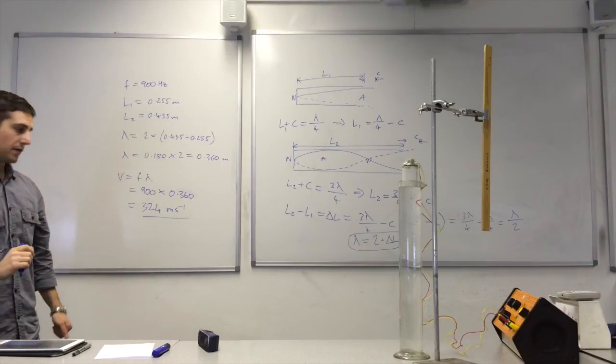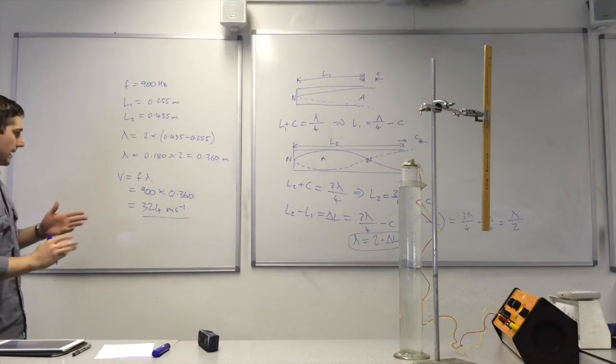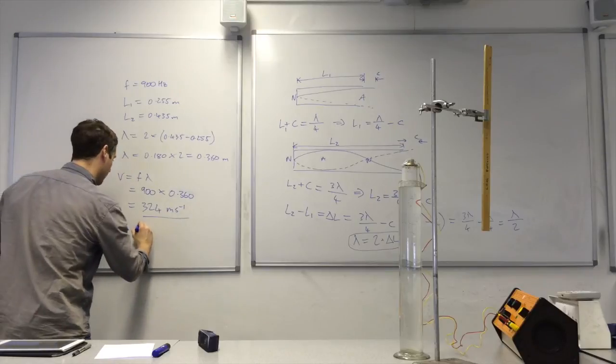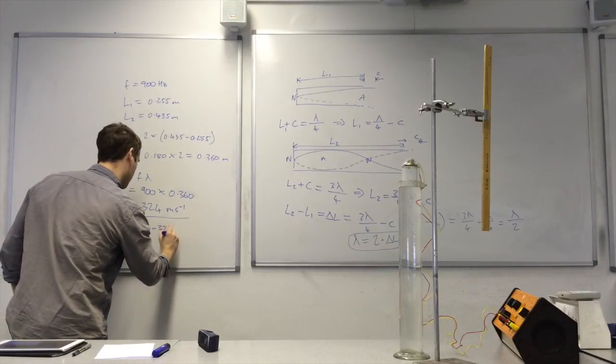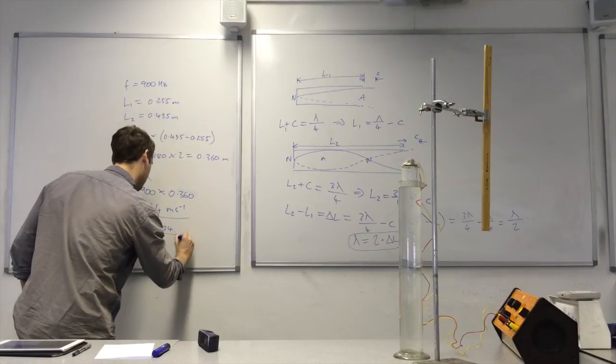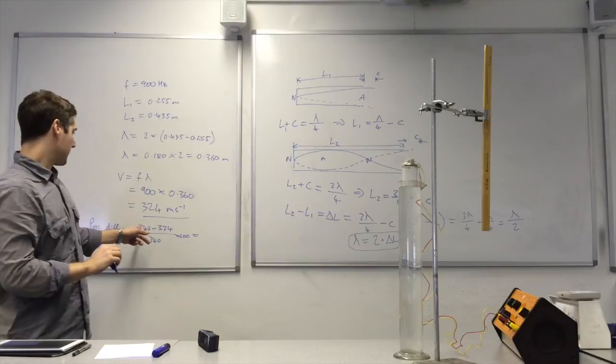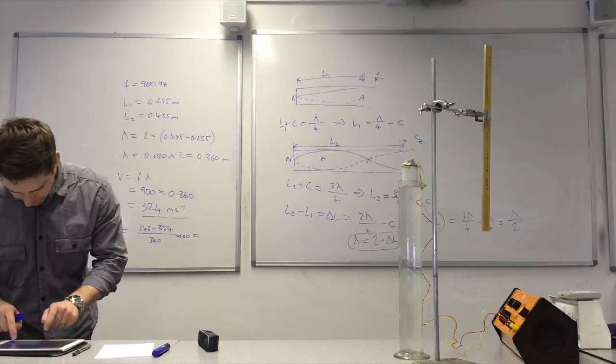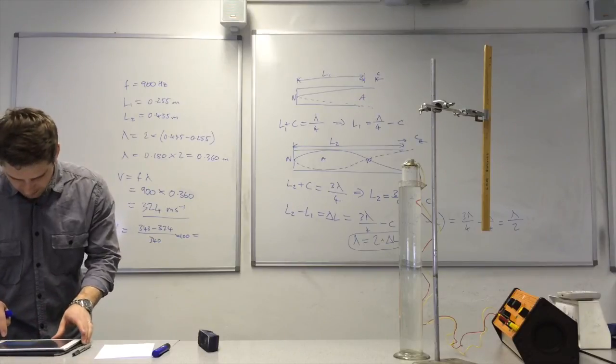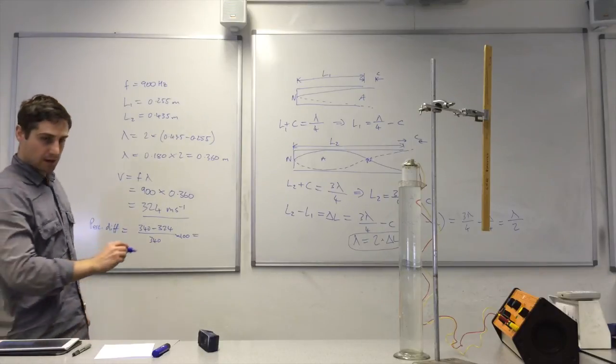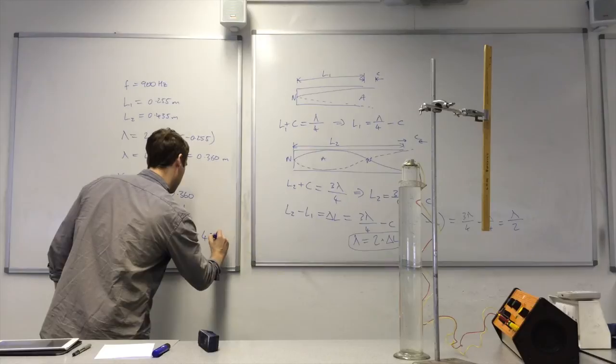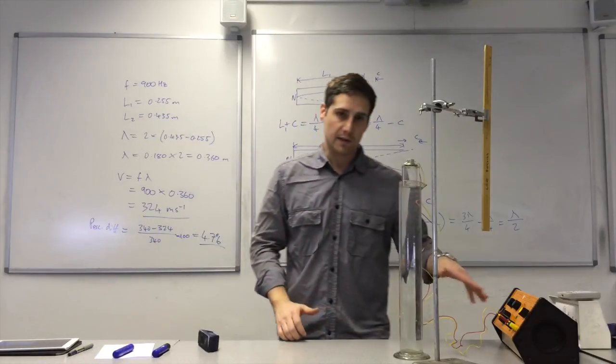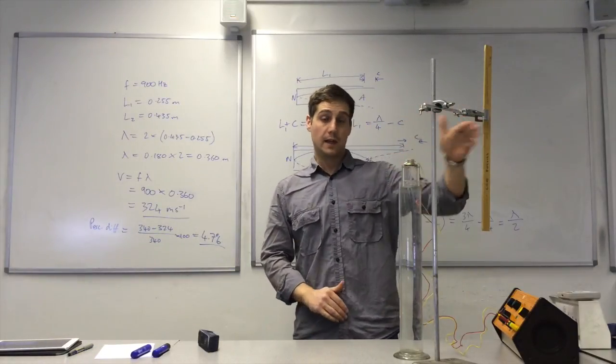So that's my value for the speed of sound using that experiment. And the percentage difference there is 340 minus 324 over 340. So that's 16 divided by 340. That's 4.7%. That's actually pretty good for the uncertainties in the signal generator and the uncertainties in taking those length measurements.